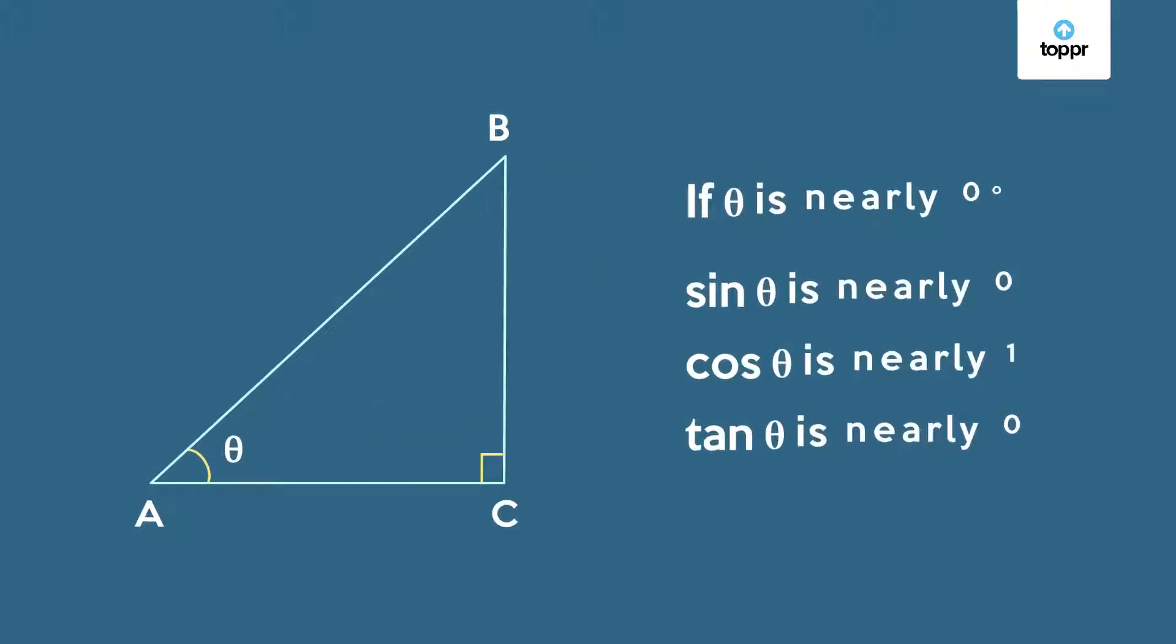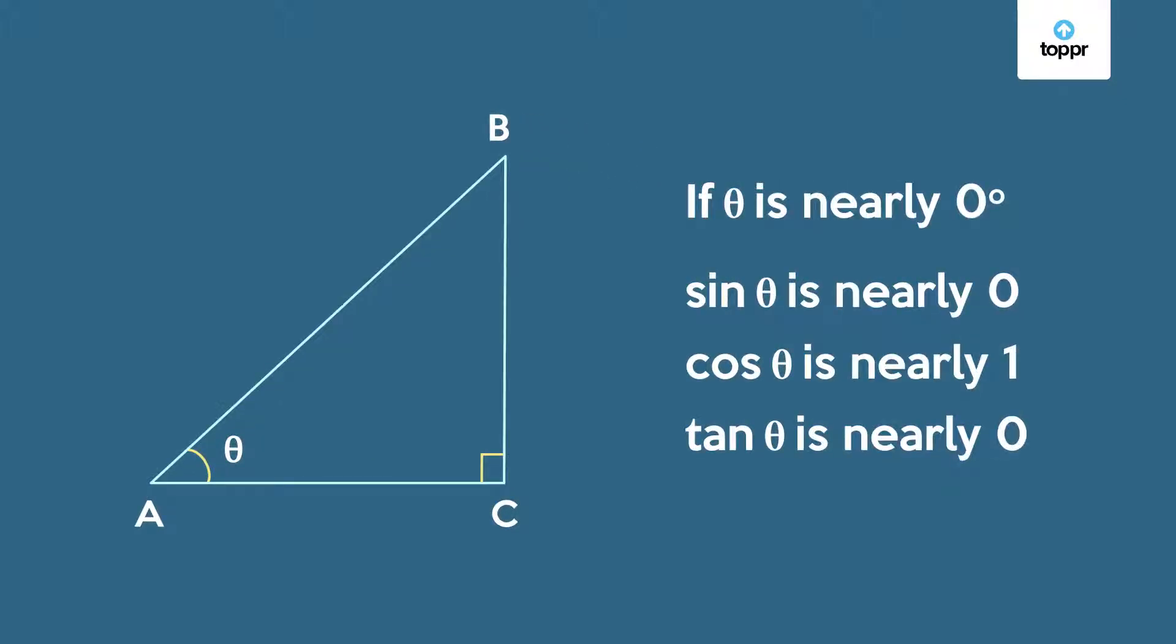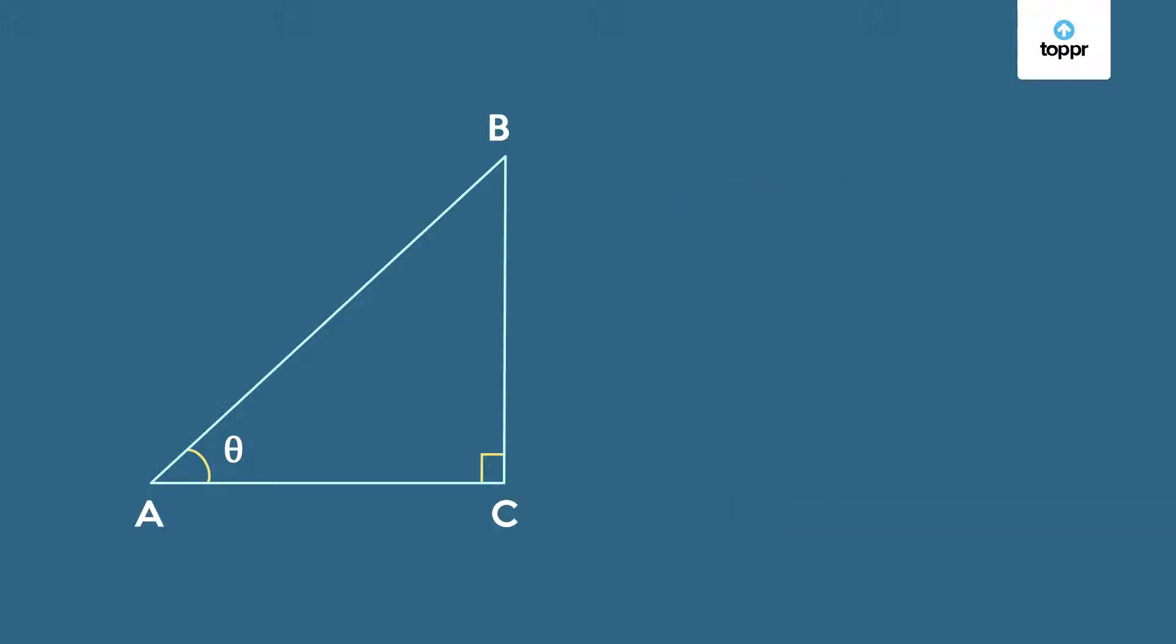We've examined what happens to the trigonometric ratios when the acute angle becomes very small. But what happens if the acute angle is nearly 90 degrees? Now our right angle triangle looks like the one shown here.